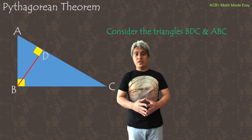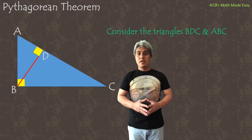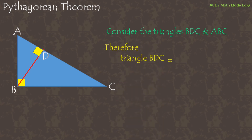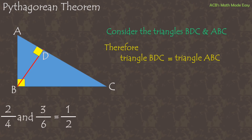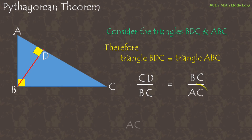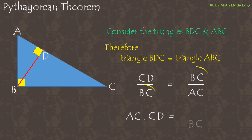Now we will consider the second pair of triangles: BDC and ABC. By the theory, triangle BDC is similar to triangle ABC — once again, just like 2/4 and 3/6, they are both one half. So CD over BC equals BC over AC. Cross-multiplying gives us: AC times CD equals BC squared. This is equation 2.